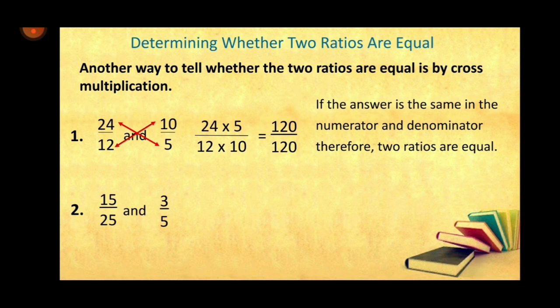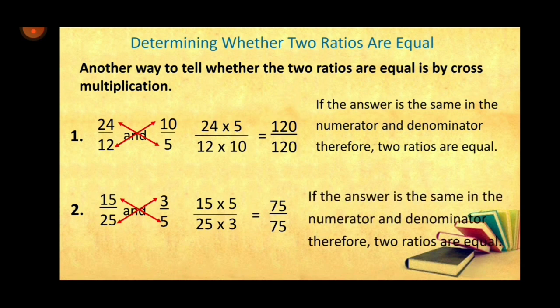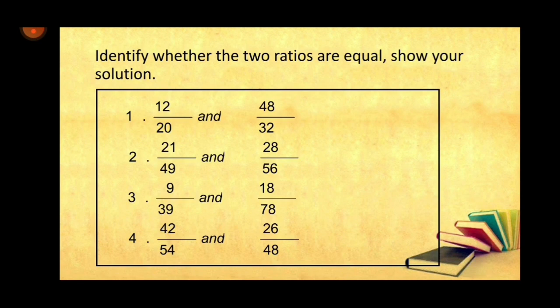Next example: 15 over 25 and 3 over 5. Cross multiply: 15 times 5 and 25 times 3 — both equal 75. Again, if the answer is the same in the numerator and denominator, the two ratios are equal. For my students, identify whether the two ratios are equal, show your solution, and comment your answer below.